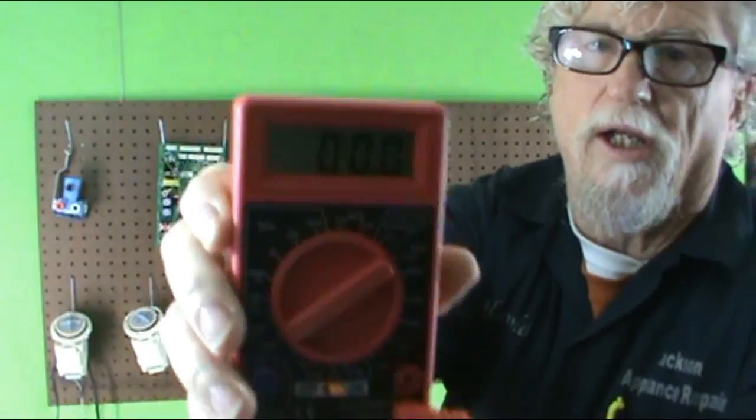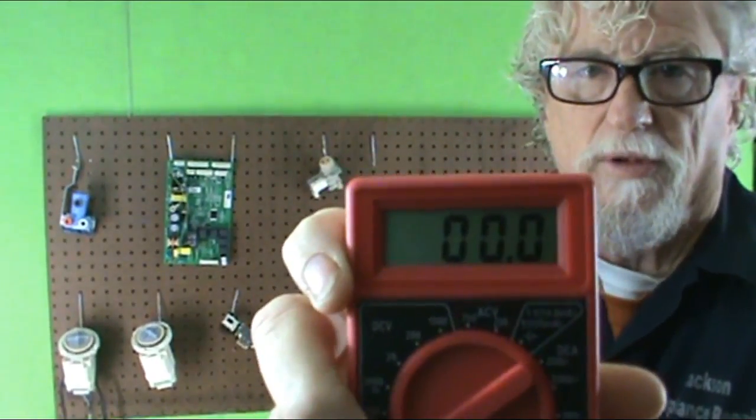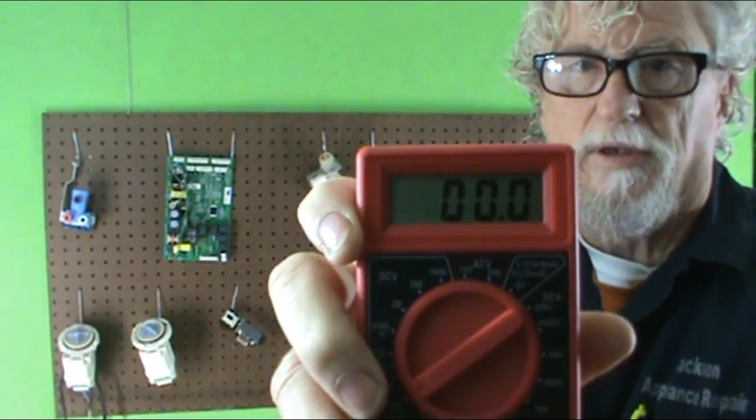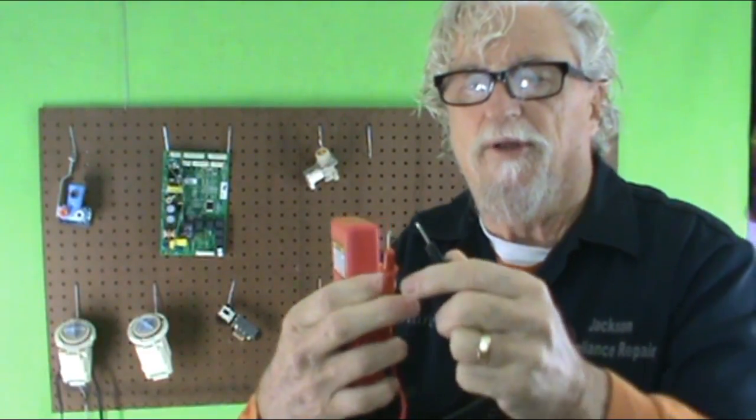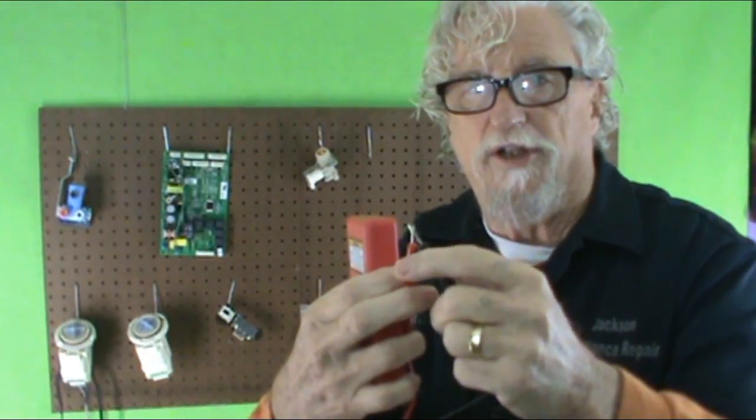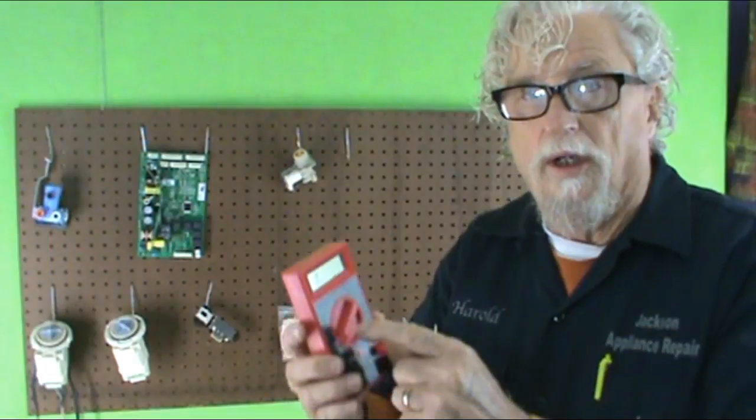Just imagine that you're not using a part and you're just taking these two leads and touching them together and it will go to zero. Let me readjust my lights so you can see a little bit better. So now when you're testing for ohms, you're testing the continuity between two leads on a particular part, but it would be the same as taking your two leads on the tester and putting them together.